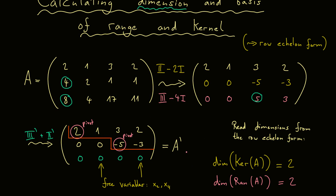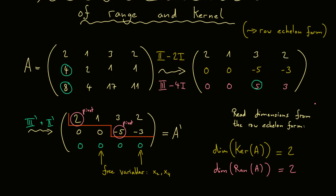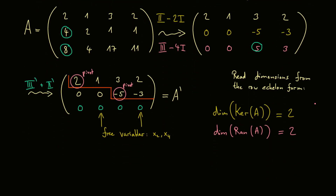This was the first step: finding the dimension of the range and the kernel. The next step is to find a basis for each space. We already know how many elements each basis has, since the dimension tells you exactly this — we need two basis elements for the kernel and two for the range. Before we do this, I have to mention something very important that is often ignored: A' is not A. We changed the matrix. We want the kernel and range of the original matrix A, not of A'.